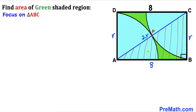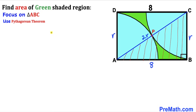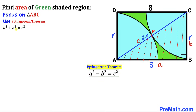Now let's focus on right triangle ABC whose side lengths are 8, r, and 2r, and apply the Pythagorean theorem: a² + b² = c². The longest leg is our side c. Calling the sides a = 8 and b = r, let's fill in the Pythagorean formula: 8² plus r² equals (2r)².